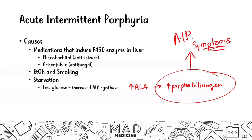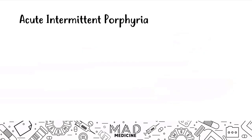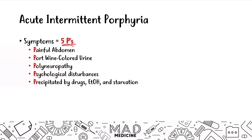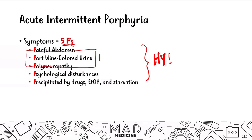The symptoms of acute intermittent porphyria are simplified with the five P's. First, patients present with a painful abdomen. They also have port wine colored urine. They have polyneuropathy. They may present with psychological disturbances. And it can be precipitated by drugs, alcohol, or starvation. Port wine colored urine is the most high-yield finding — that should clue you in to acute intermittent porphyria on Step 1.